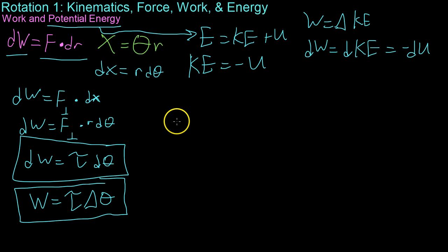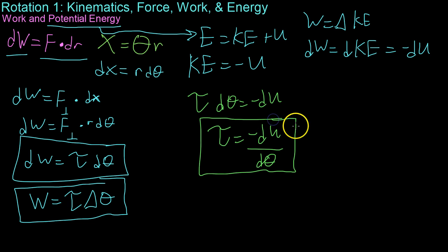And from here, we already found that this dW is torque times d theta. So substituting that in, we get that torque d theta equals negative dU. And then all we have to do is recombine the variables to get that torque is the negative change in potential energy with respect to angle, which makes sense. It follows from the same analog as force equals negative dU dx.